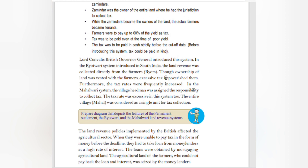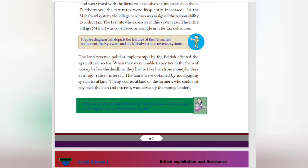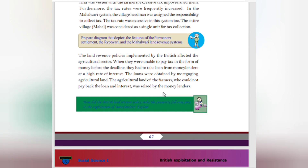In the Ryotwari System, tax rates were frequently increased. In the Mahalwari System, the village headman was assigned responsibility to collect tax; the tax rate was excessive here too, and the entire village (mahal) was considered as a single unit for tax collection. The land revenue policies implemented by the British severely affected the agriculture sector. When farmers were unable to pay tax in cash before the deadline, they had to take loans from money lenders at high rates of interest, mortgaging their agricultural land. Farmers who could not repay the loan and interest had their land seized by money lenders.